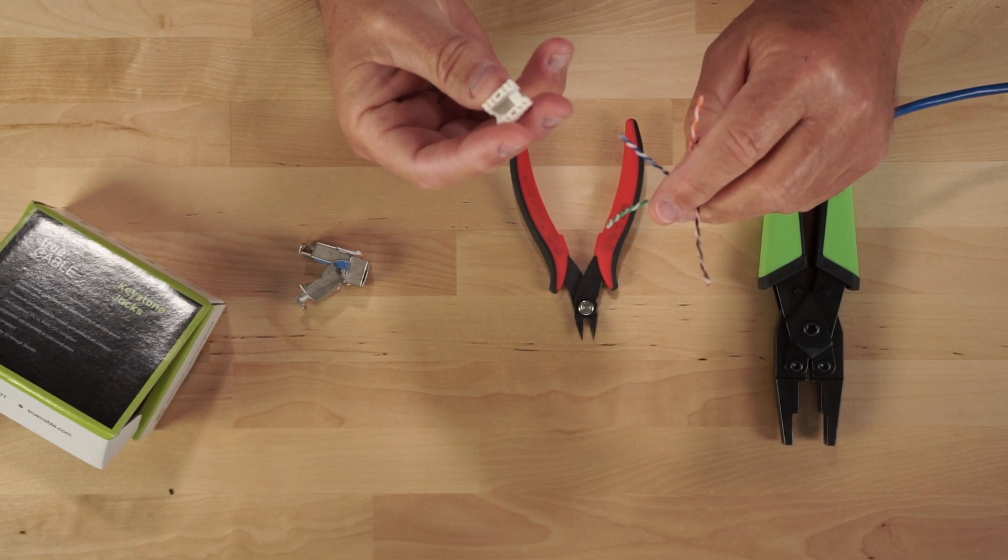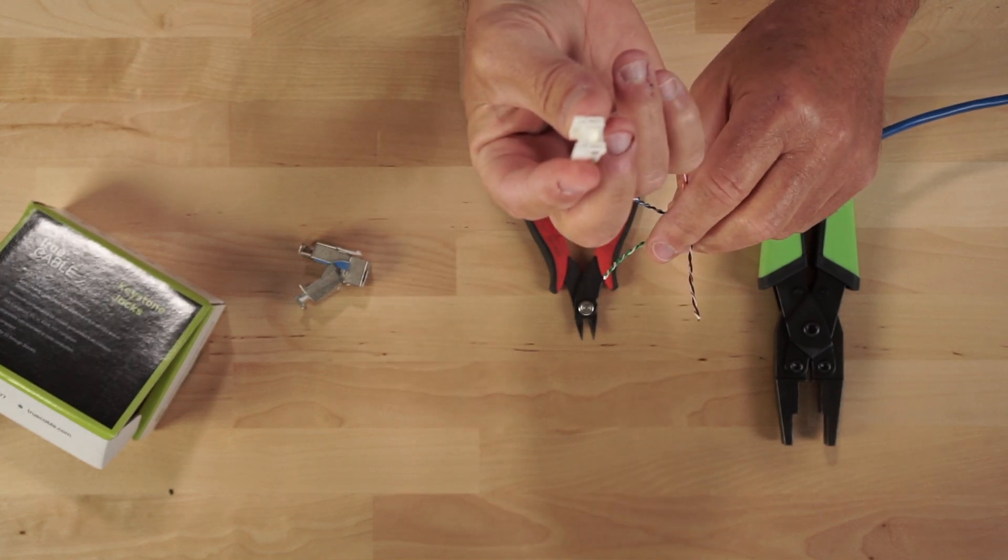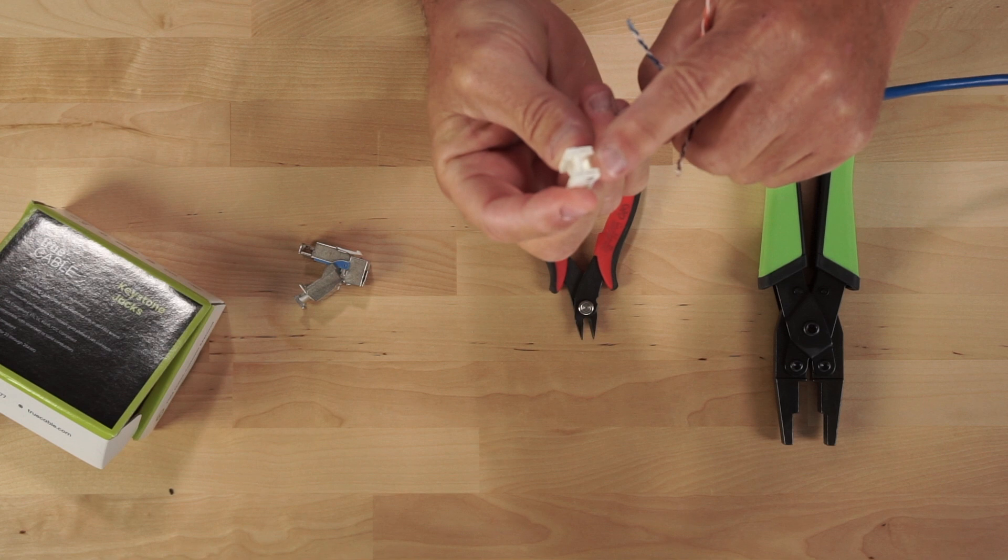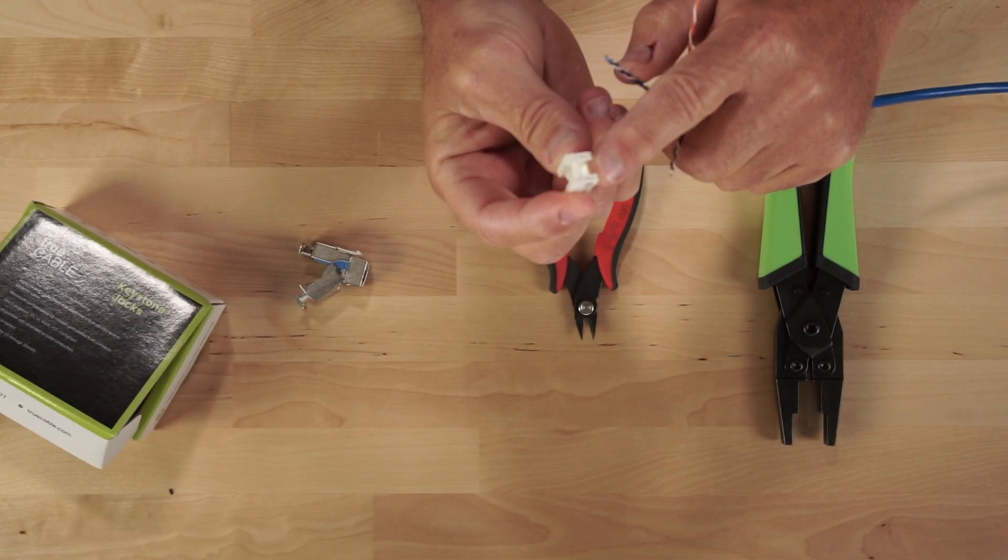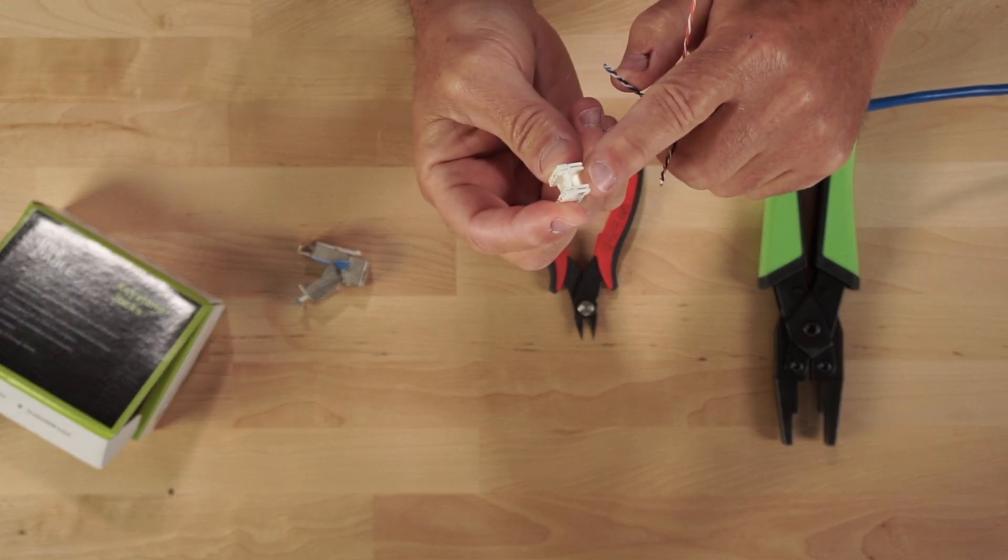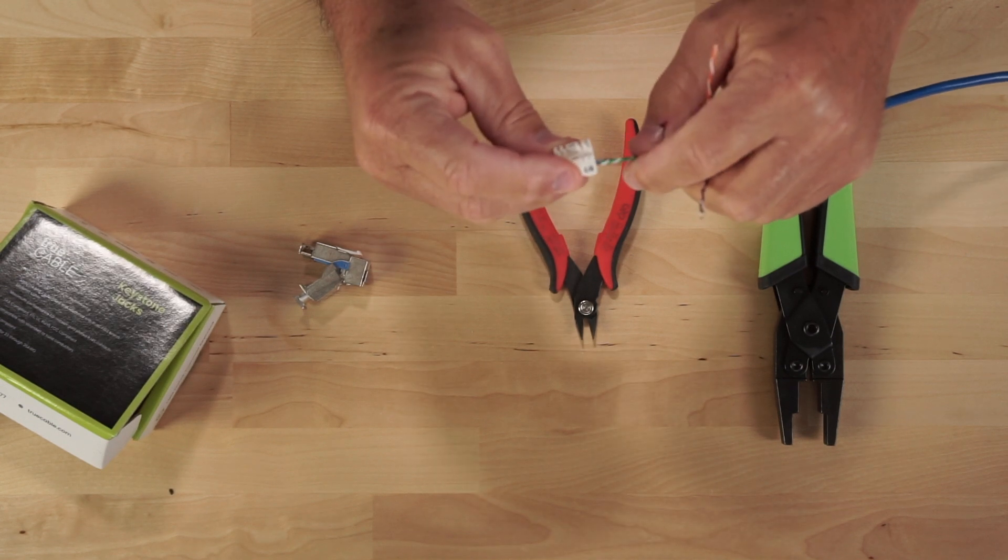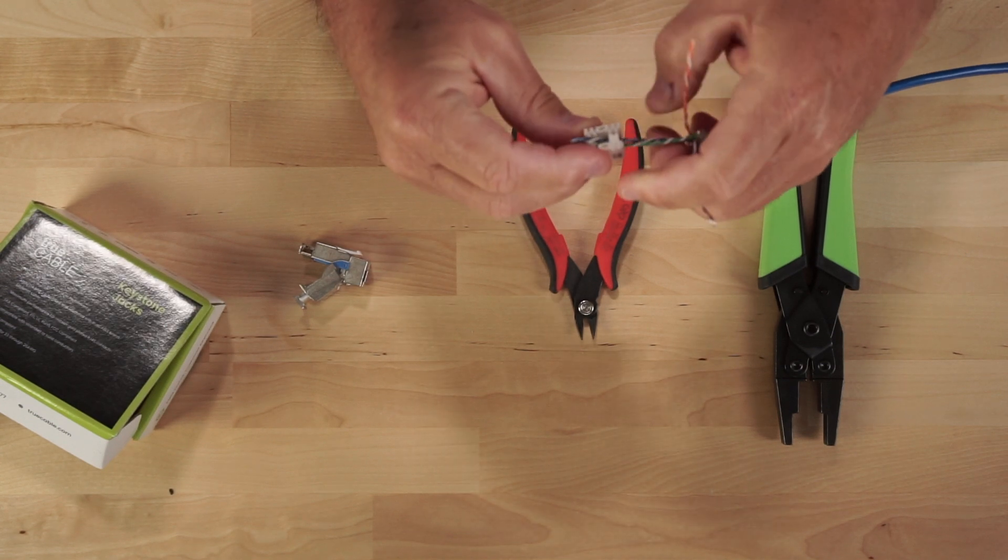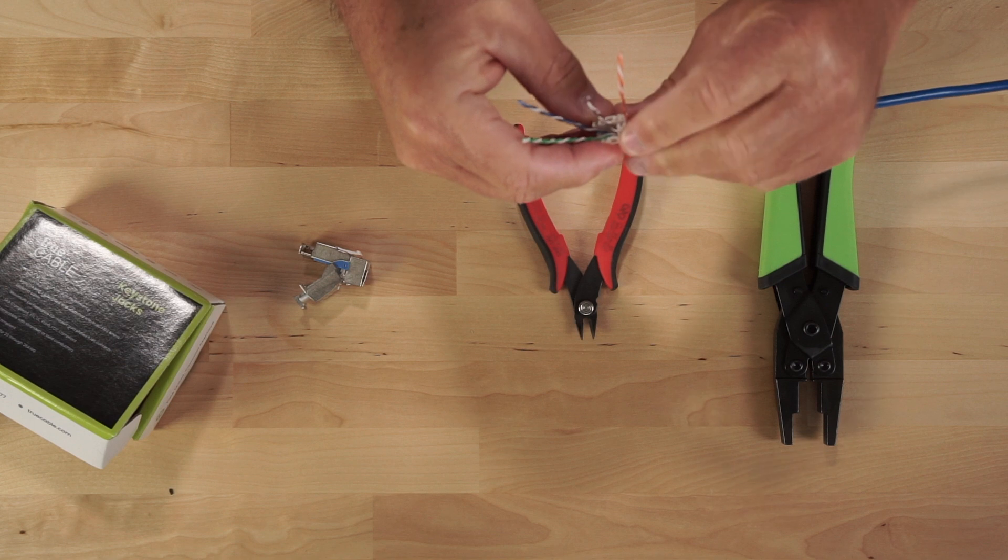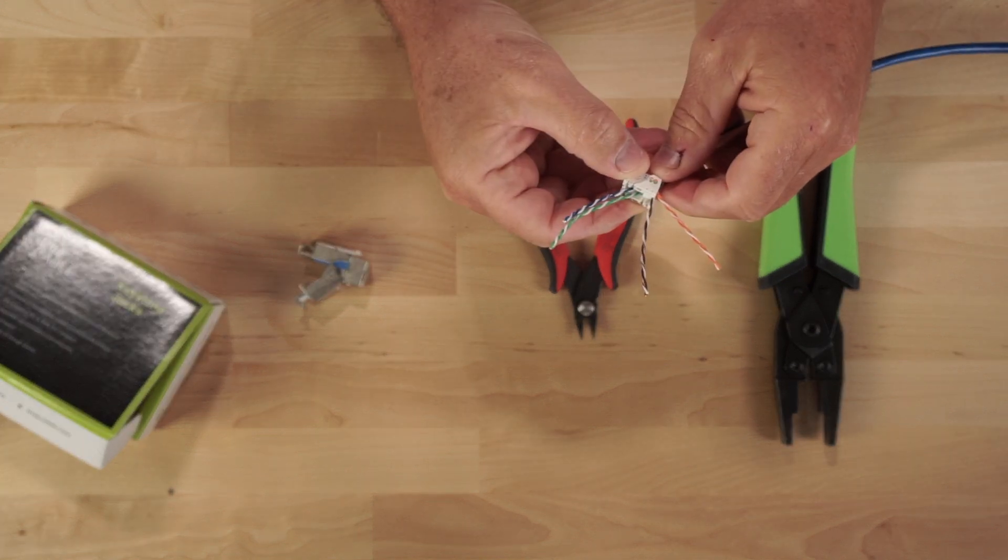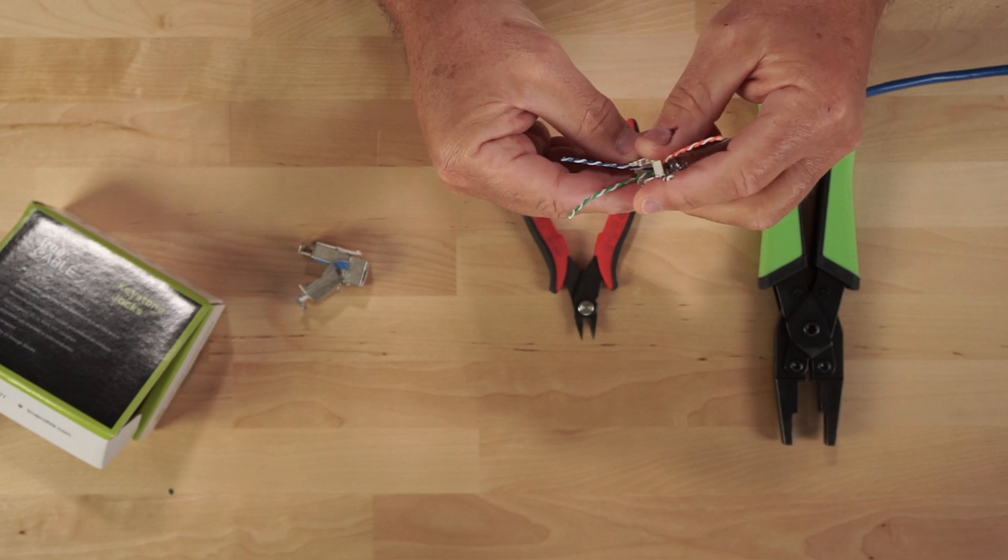And what you do is the green pair and the blue pair, because I'm going to terminate with 568B, I'm going to put the green pair and the blue pair in through the bottom just like that, and I'm going to leave the brown pair and the orange pair up on the top just like that. So once I have it in there, I'm going to borrow that piece of jacket that we cut away to use it to open up my pairs a little bit.